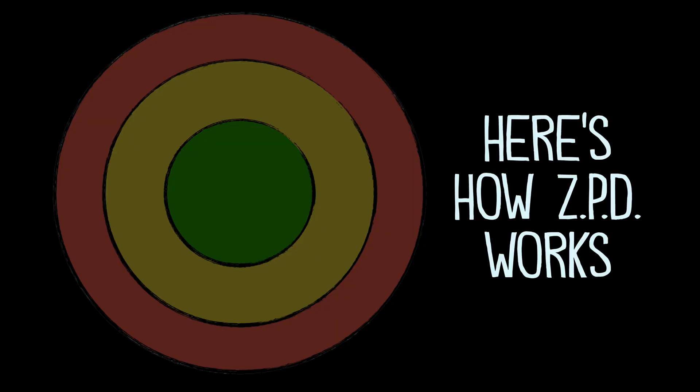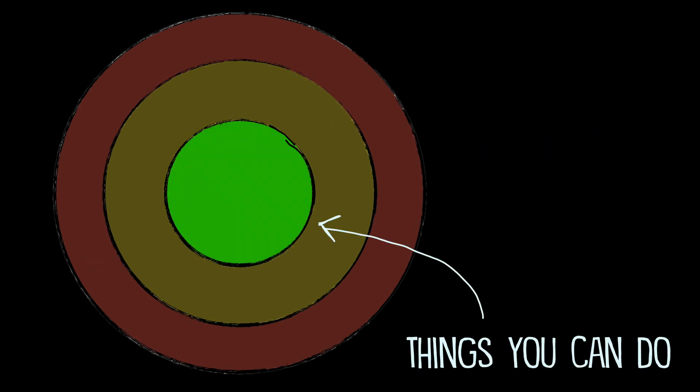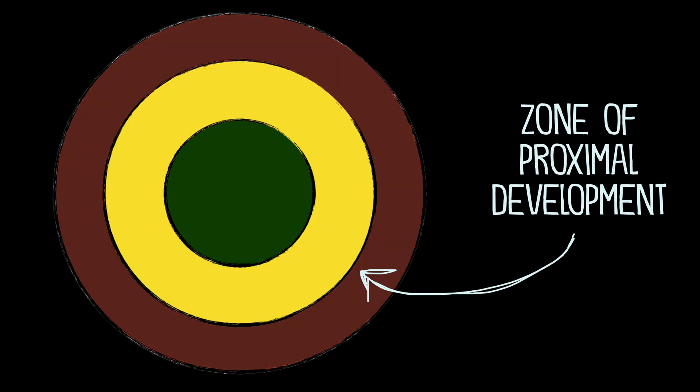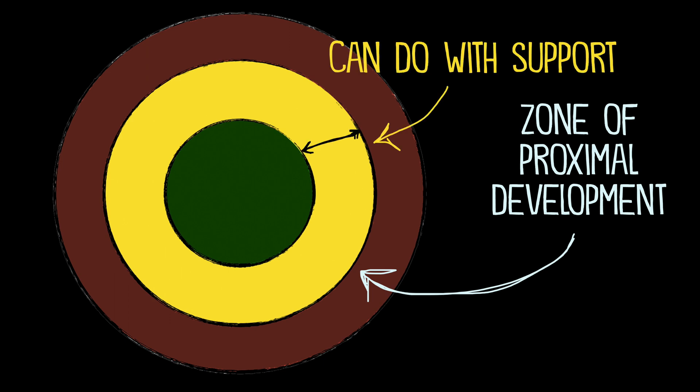Now here's how ZPD works. At the center, you have the things that you can do on your own. On the outside, you have the things that you cannot do on your own. But in this middle zone, you have the Zone of Proximal Development, which are the things that you can do with guidance and support.